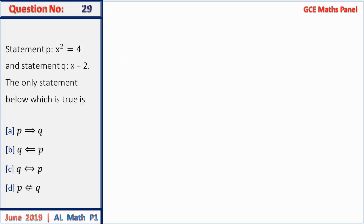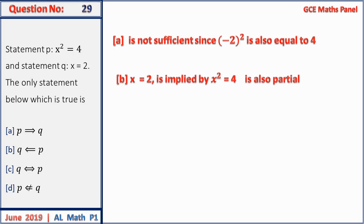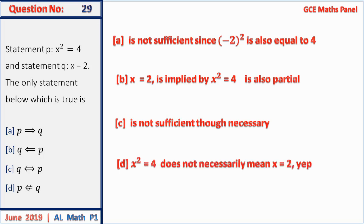Question 29: p is 'x² = 4', q is 'x = 2'. Evaluating the options: A is not sufficient since (−2)² = 4 also. So p does not always imply q. Option B is also partial. Option C is not sufficient. The correct answer is D: x² = 4 does not necessarily mean x = 2.